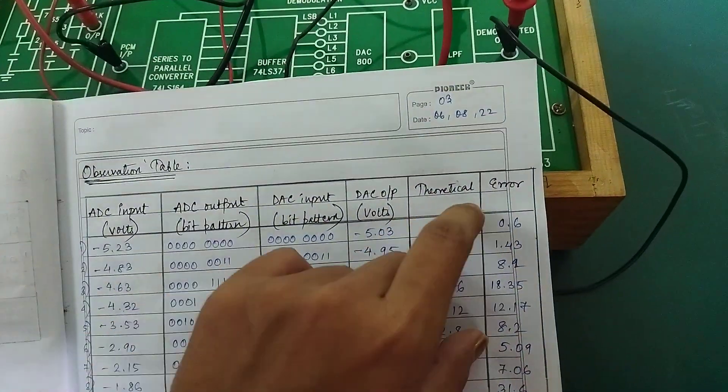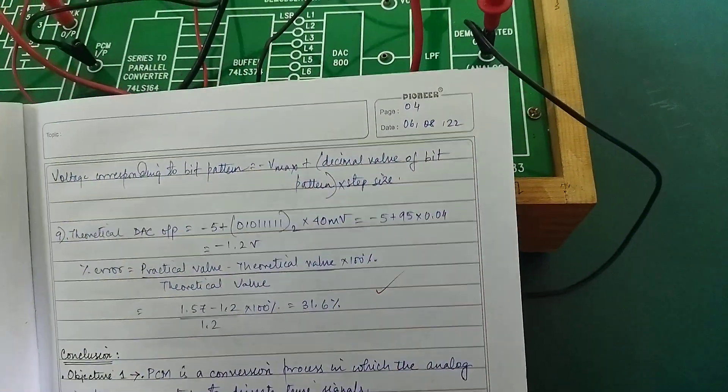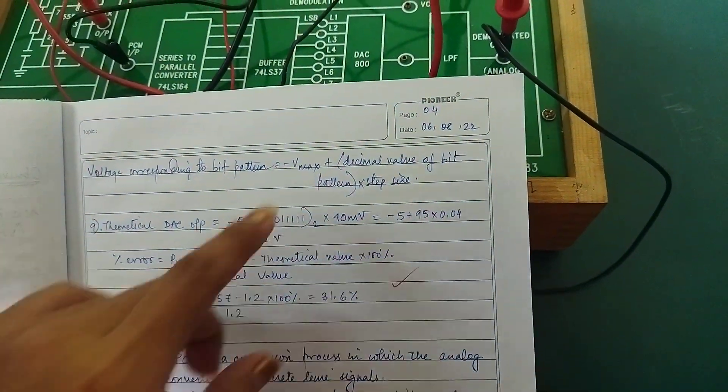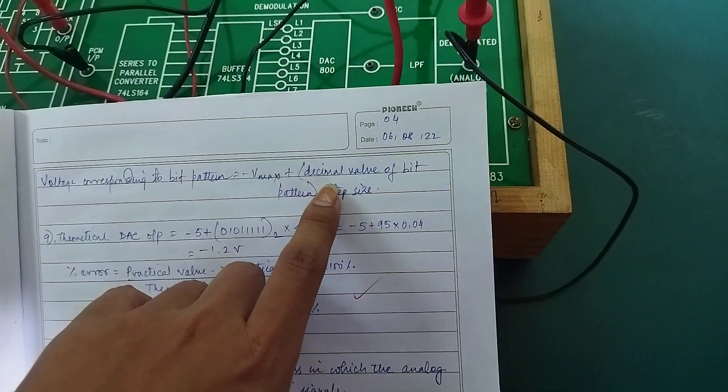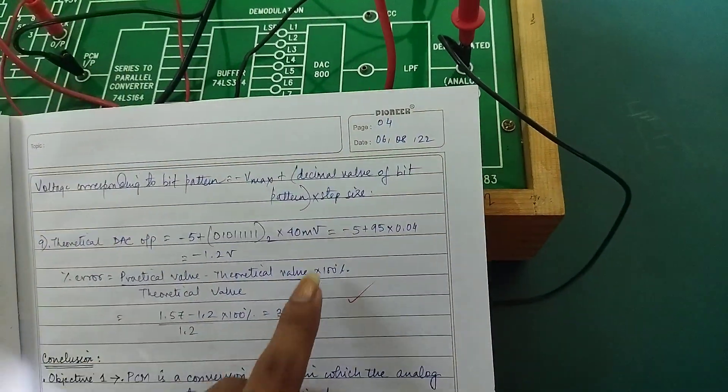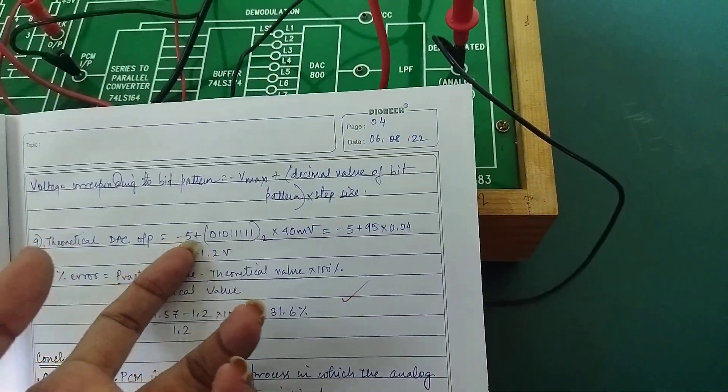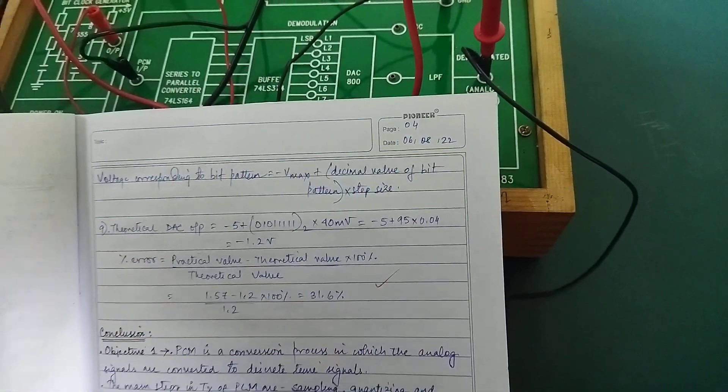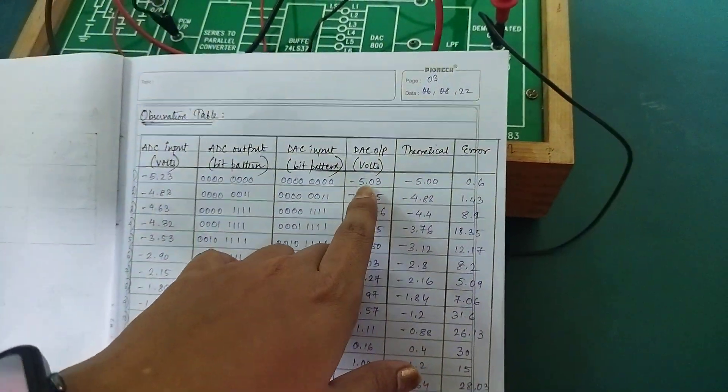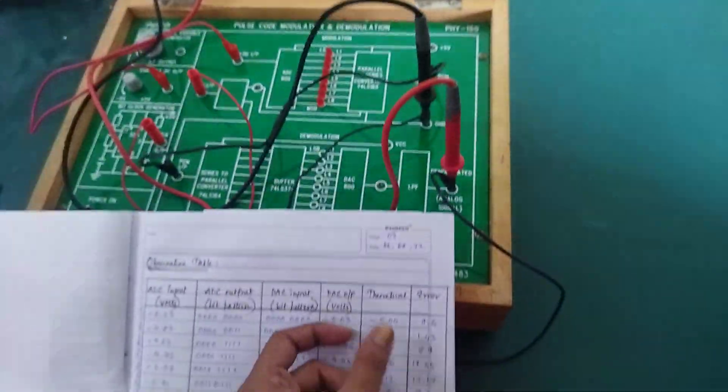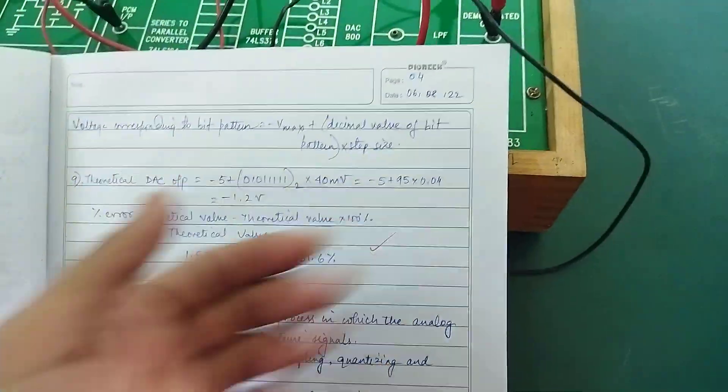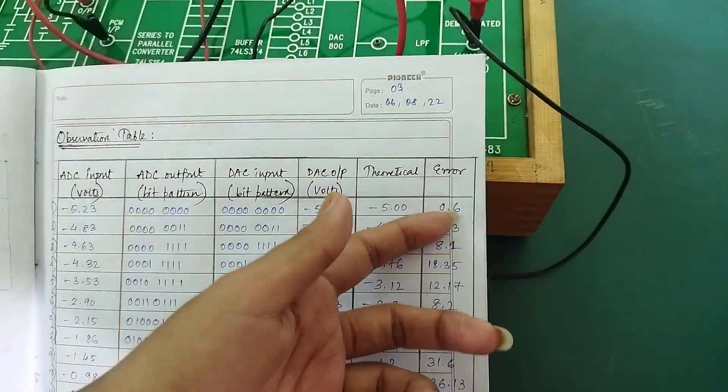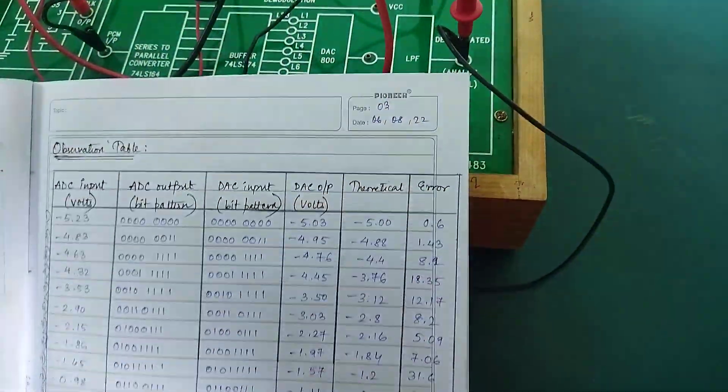The theoretical value calculation: for bit pattern 0, the Vmax is minus 5, the decimal value is 0, times step size 40 millivolts. The DC output is minus 5 volts. The theoretical value is minus 5 volts. The error is produced. The error calculation is practical minus theoretical. The error is 0.6 volts.